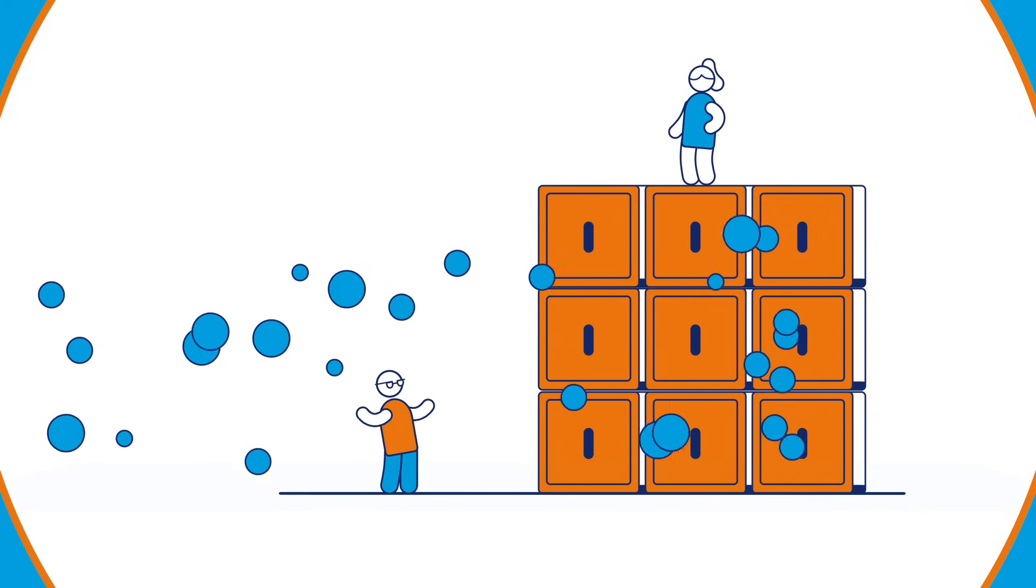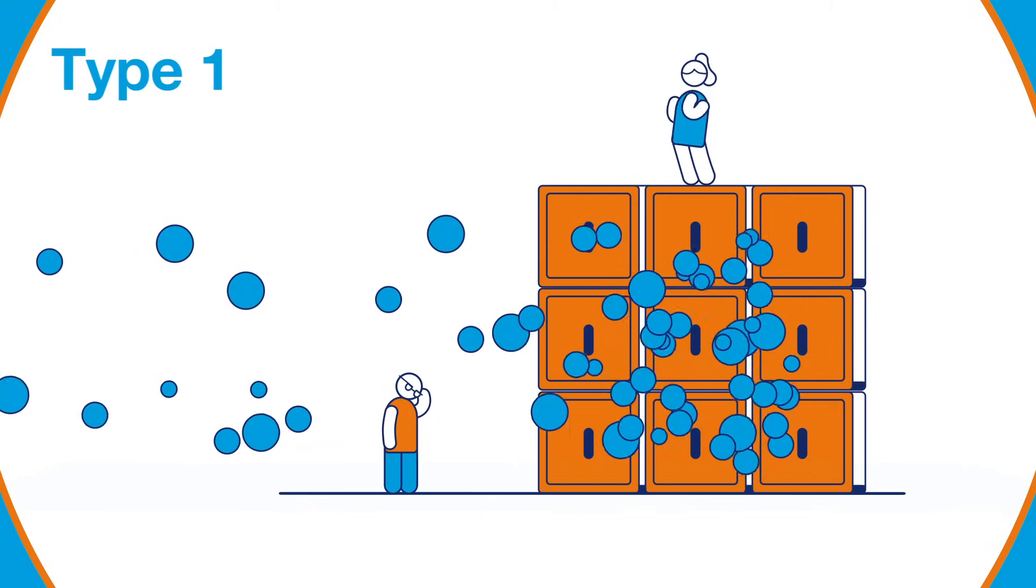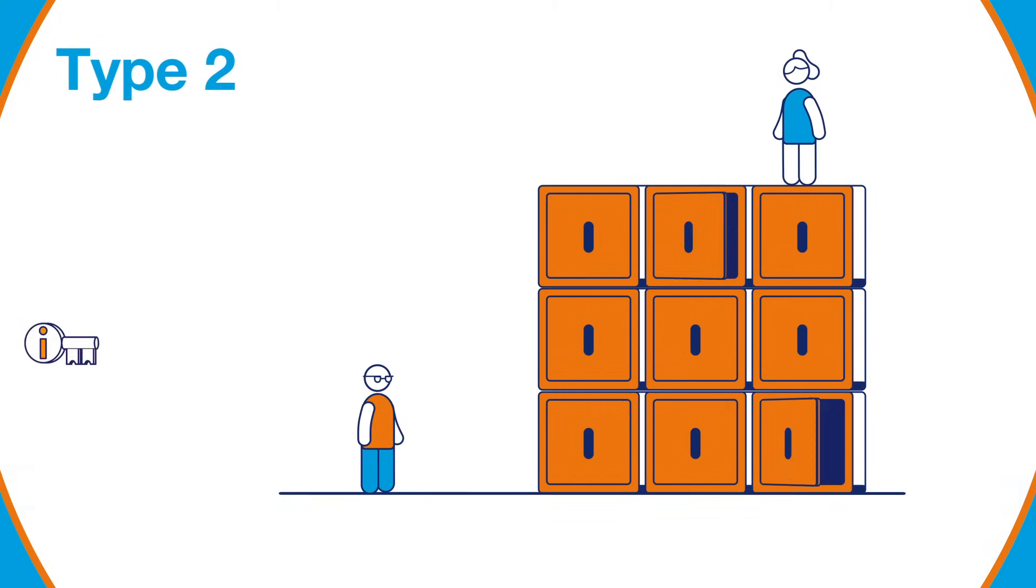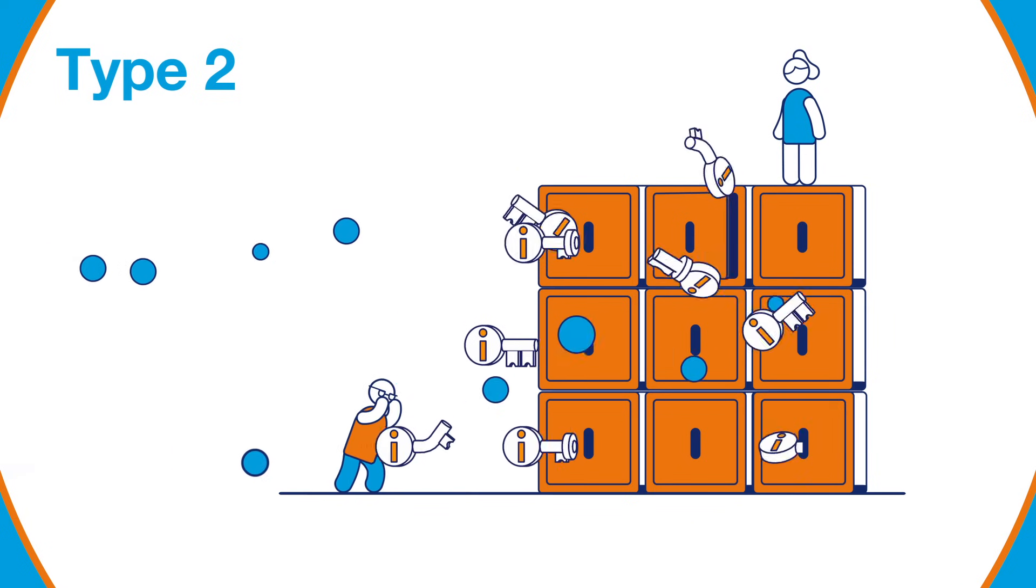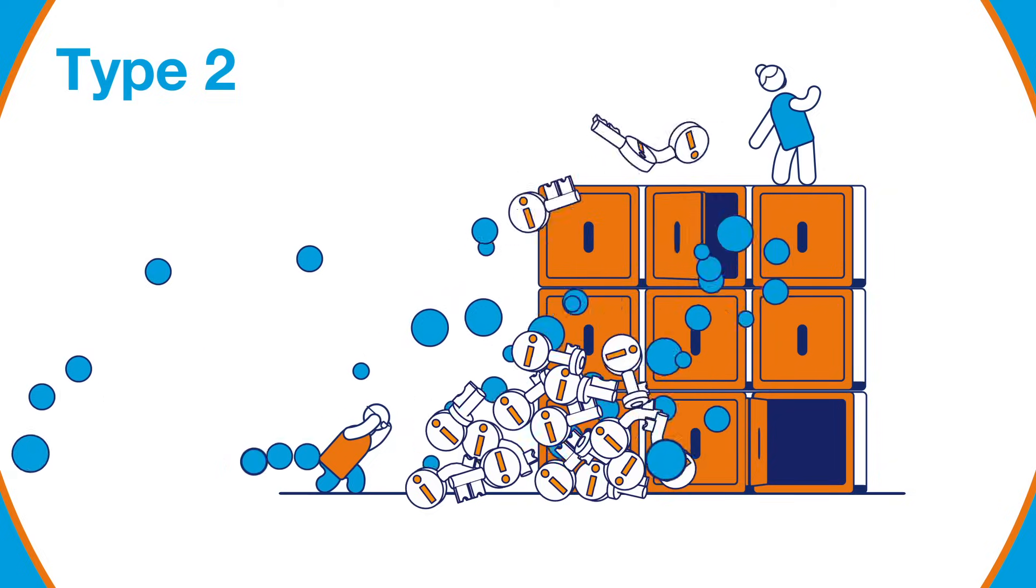But if you have diabetes, this system doesn't work. When you've got Type 1 diabetes, you can't make any insulin at all. If you've got Type 2 diabetes, it's a bit different. The insulin you make either can't work effectively or you can't produce enough of it.